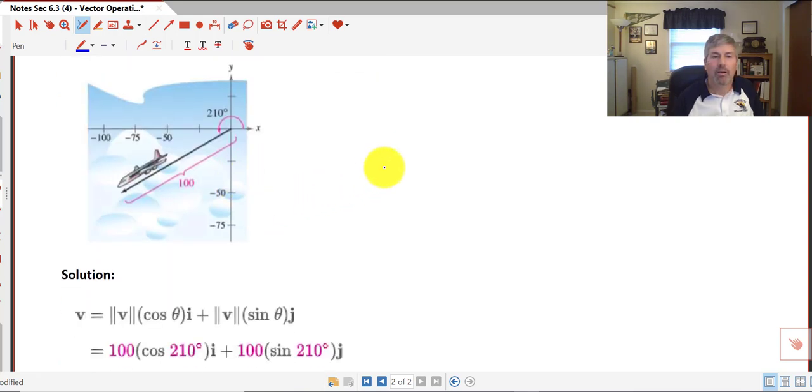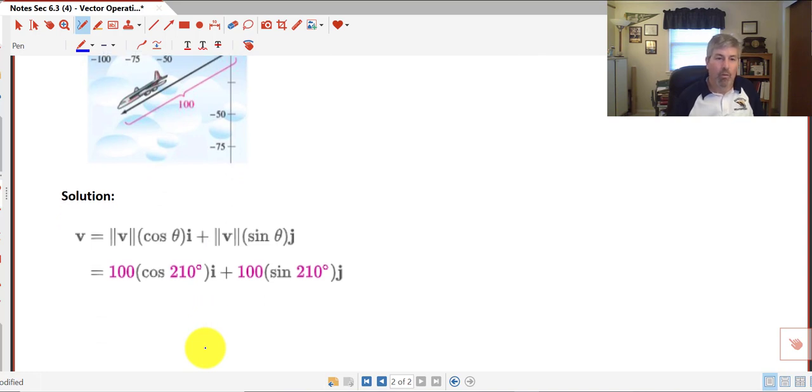Taking a look at our solution. The magnitude of v cosine theta i plus the magnitude of v sine theta j. Substituting all the information in. And then we get, so the cosine of 210 is a 30 degree angle in the third quadrant. That would be 100 times negative square root of 3 over 2 i.